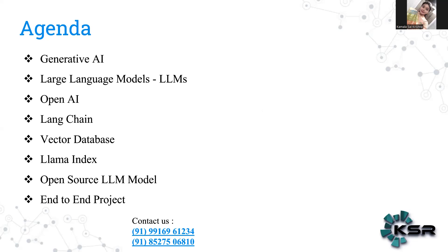Regarding open-source models, we have LLaMA 2, Bloom, and Falcon — and we will discuss how to create end-to-end applications using them. Coming to LangChain — I hope everyone has heard of LangChain — we will be using Python to define LangChain and will cover its components, such as memory and chain agents. We will also be creating an application in this framework, and we will discuss all of this in detail in later classes.